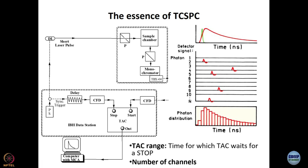The typical smallest value of TAC range I know of is 26 nanoseconds; 50 nanoseconds is more common. What kind of TAC range you use depends on what kind of decay you are looking at, because for a good analysis the decay must be complete.